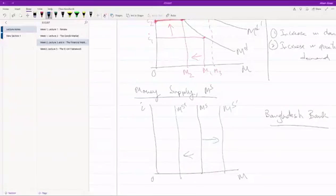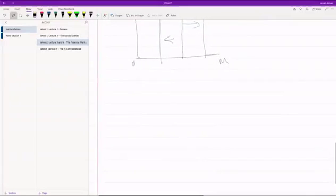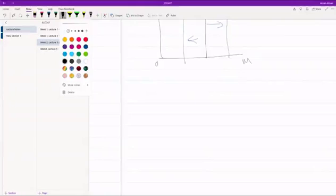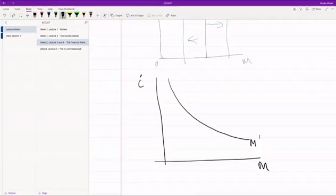If we put these two together, if we put money demand and money supply together, what we are going to get is: we have M here, we have I here, this is money demand, and we have a money supply.